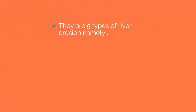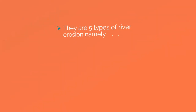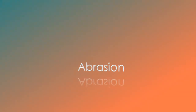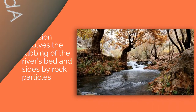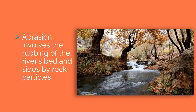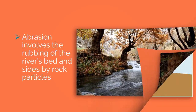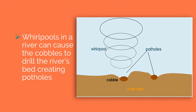There are five types of river erosion. Abrasion involves the rubbing of the river's bed and sides by rock particles. Whirlpools in a river can cause cobbles to drill the river's bed, creating potholes.